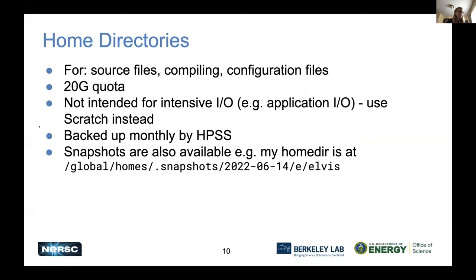Finally we have the home directories — what you land in when you first log in. These are good for bookkeeping: put your setup scripts and those kinds of things there. Everyone gets 20 gigabytes of quota, and we very rarely give out quota increases because we have all these other file systems for large capacity. Don't read or write large files from your home directory during compute jobs — it will not go fast. Home directories are backed up every month to HPSS, and we also have snapshots so you can recover deleted files yourself.